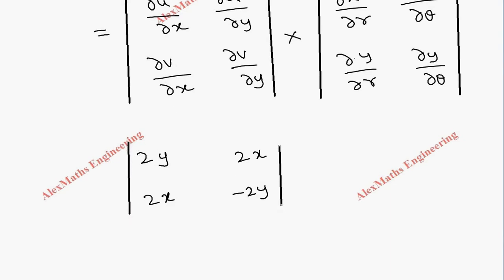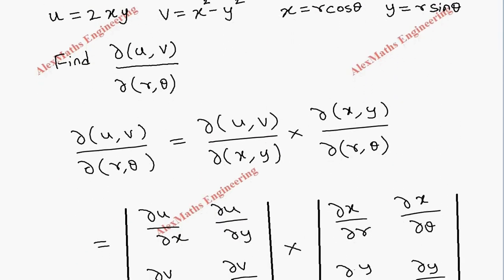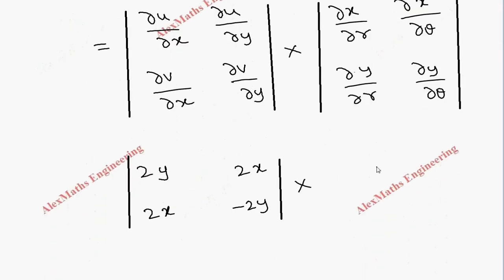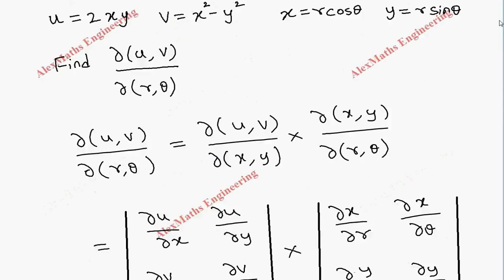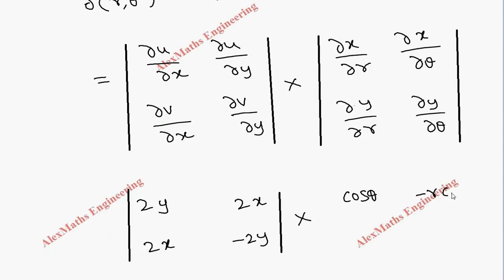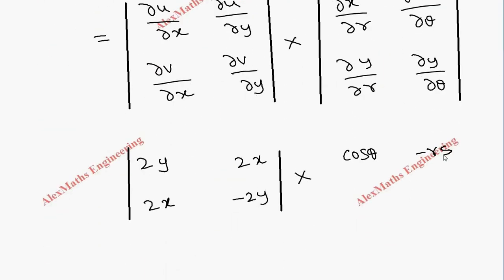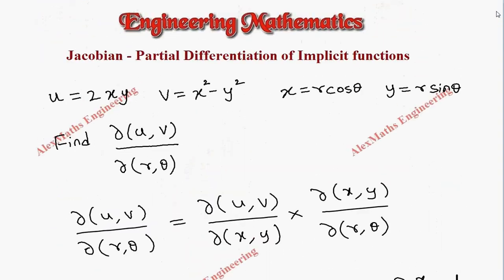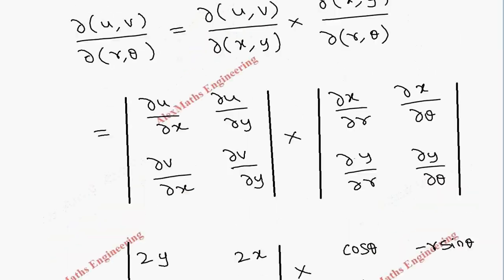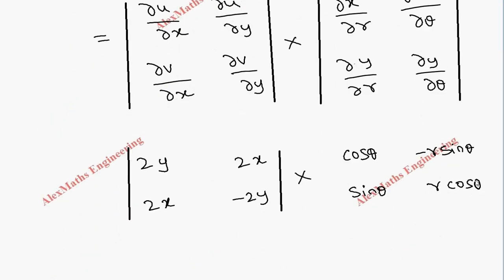In the same way, we write the second determinant elements. ∂x/∂r: cos θ is constant, so this is cos θ. Then ∂x/∂θ: differentiation of cos θ is −sin θ and there is r, so it is −r sin θ. Then ∂y/∂r: sin θ is constant, so we write sin θ. And ∂y/∂θ: r remains as is and differentiation of sin θ is cos θ, giving r cos θ. So we now have all four elements of the second determinant.